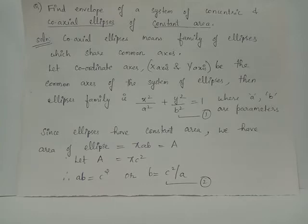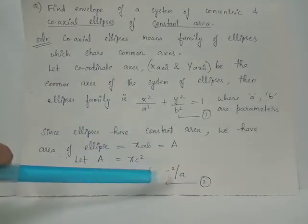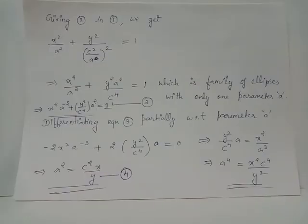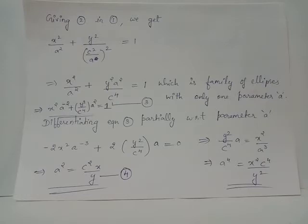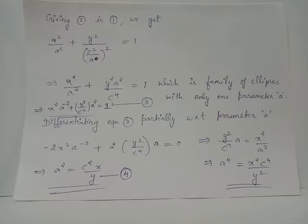Substituting this relation into equation 1, we replace b² with (c²/a)², reducing equation 1 to a single-parameter equation in a. This can be rewritten as x²·a⁻² + y²·a²/c⁴ = 1. Let us call this equation 3.